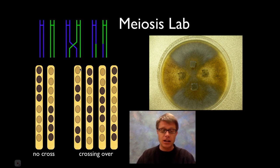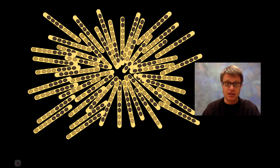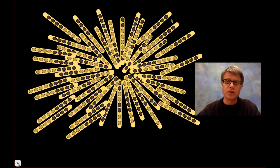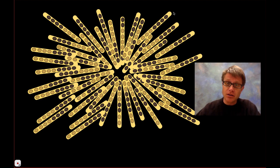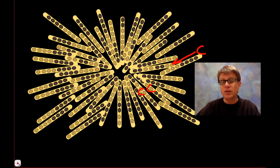You take those spores, put them under glass, push on it with your finger, and you'll pop out all the spores — it's going to look something like this. Now you can go through and count the number of spores that are crossing over versus not crossing over. Some are not crossing over, but others show crossover. You go through the whole thing and figure out the frequency of crossover.